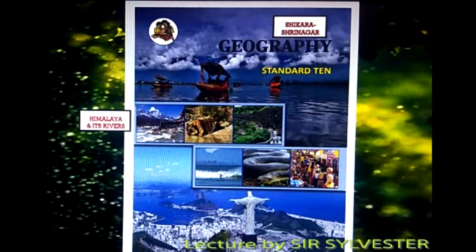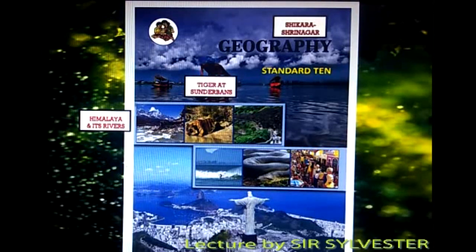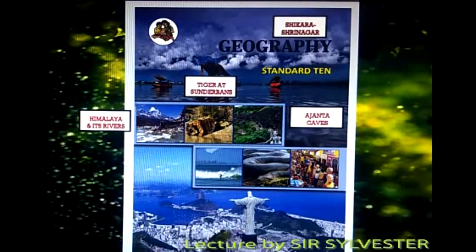This is the cover page of your geography textbook. It has various images. The first is the Shikara lake located at Srinagar. Next are the Himalayas along with a river flowing — perennial rivers that flow all throughout the year. Next, the national animal of India, tigers at Sundarbans, the world's biggest delta. Next, we have the Ajanta caves again in India.